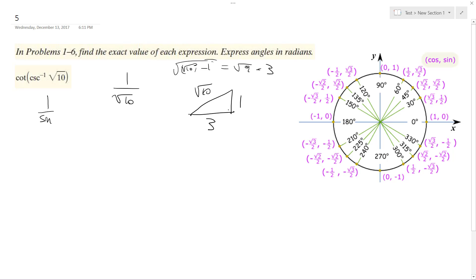So that was our hypotenuse based off of what we have for the sine here, because it's 1, it's the same thing as just 1 over square root of 10.